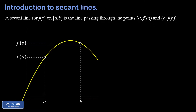In this video, we introduce the idea of a secant line for a function f of x on a given interval. We learn to compute the slope of a secant line, and we work an example of computing the equation of a secant line. We start out with the definition of a secant line for f of x on an interval a to b.